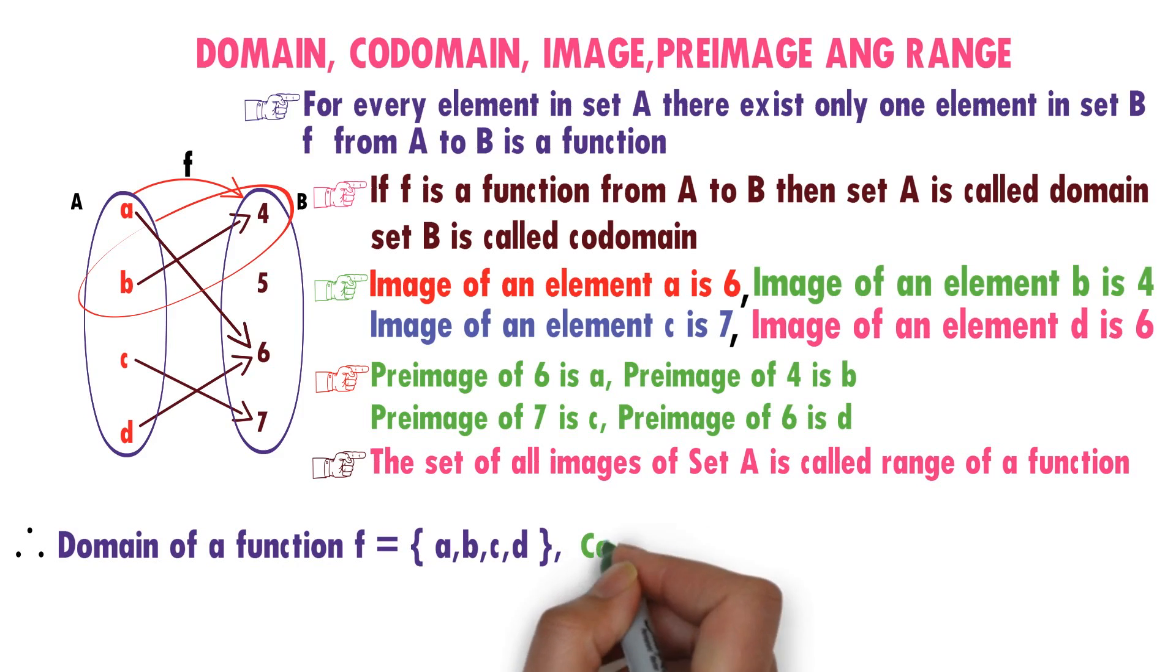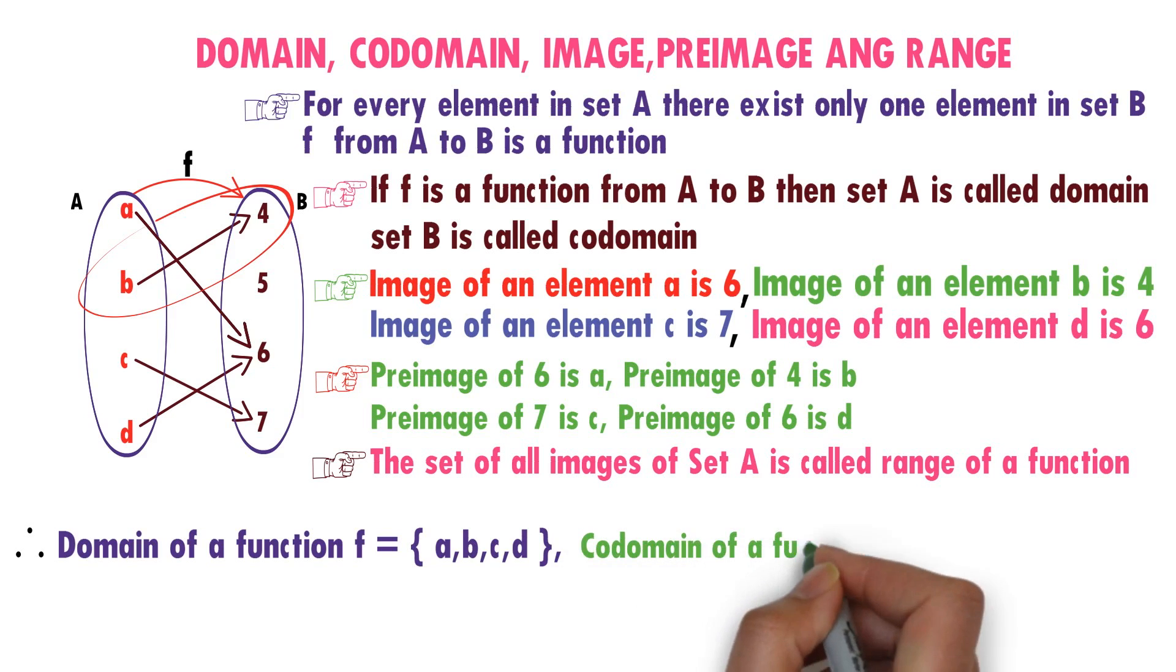Now, we will see codomain of the function. What is codomain of the function? Set B. 4, 5, 6, 7.